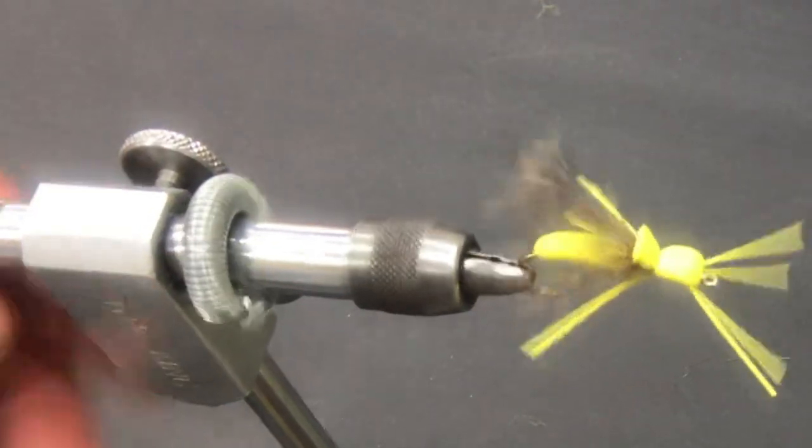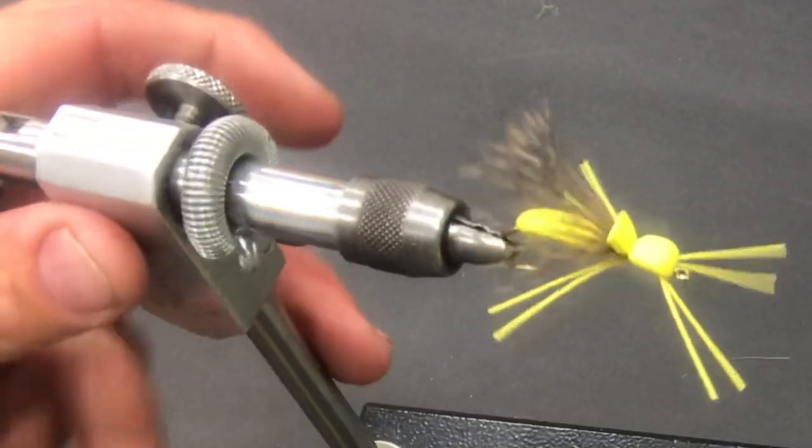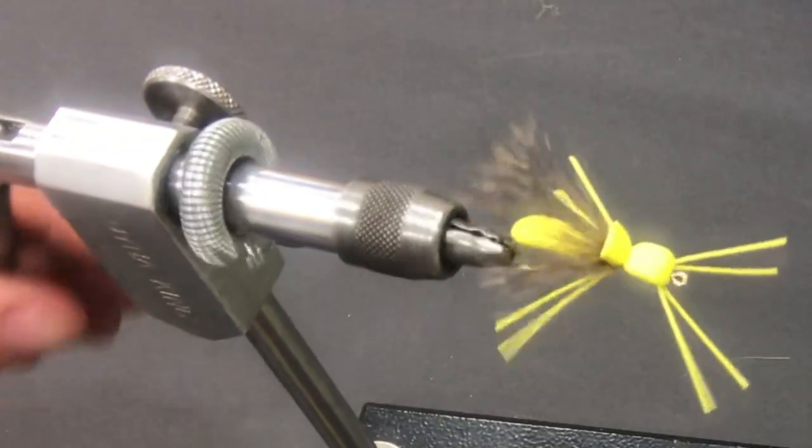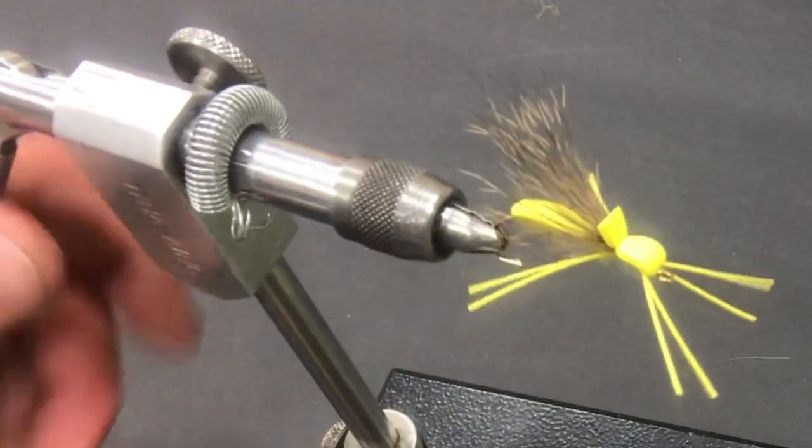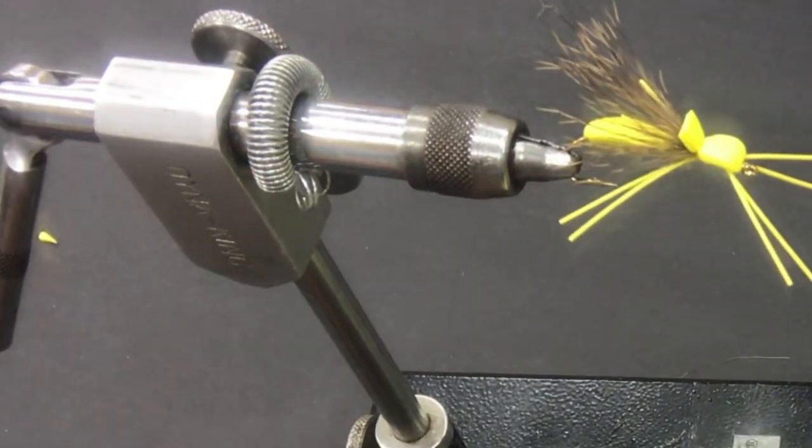Even when I'm explaining this fly, I can tie it in under two minutes. I'm not sure what this timed out at, but I can get these done in a minute and a half to two minutes. Very simple. Very easy.